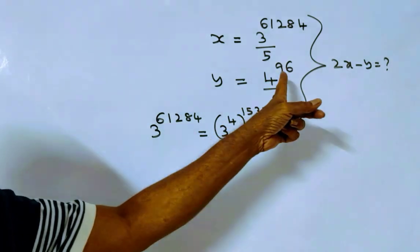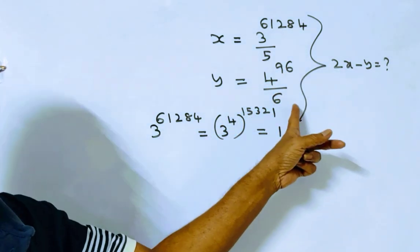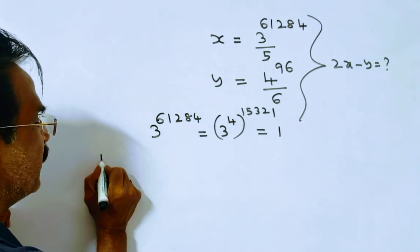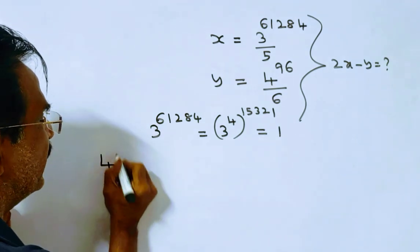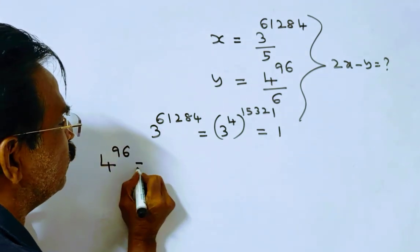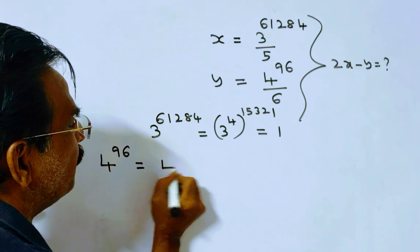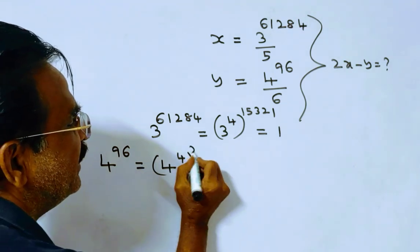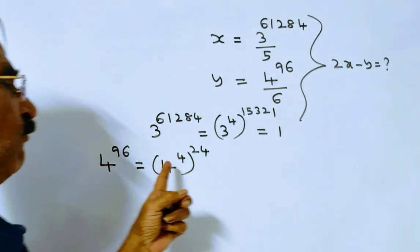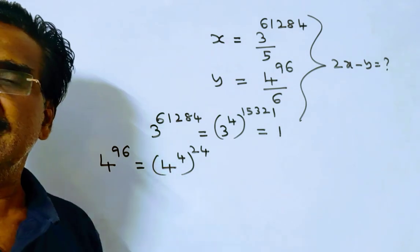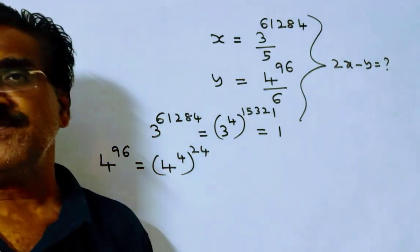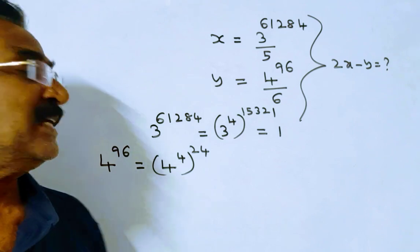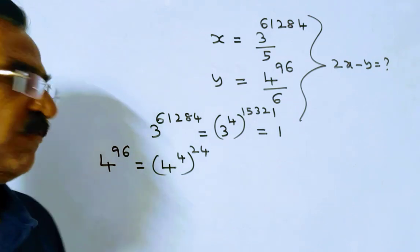Then coming to 4 power 96 divided by 6. Friends, 4 power 96 is equal to 4 power 4, whole power 24. Friends, 4 power 4 is equal to 256. When 256 is divided by 6, the remainder is 4.